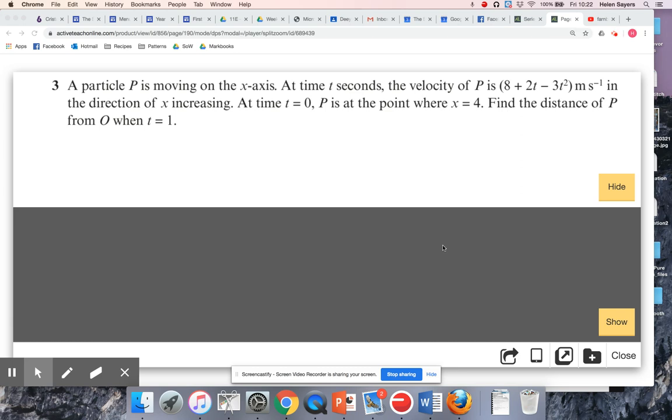Okay, so we're looking at exercise 11D from the First Gym Mechanics textbook. We're told about a particle P, we're given its velocity in terms of T, and we're told that it doesn't start at the origin. So when T is zero, it's starting at X is four, and we want the distance of P from the origin when T is one.